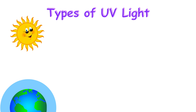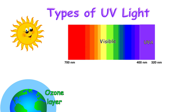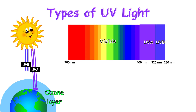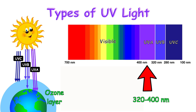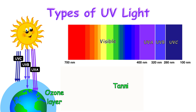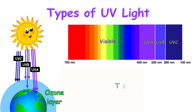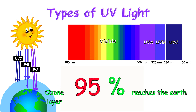UV light can be further divided into UVA, UVB, and UVC. UVA has the longest wavelength, between 320 and 400 nanometers. UVA can cause immediate tanning and skin aging, which includes wrinkles. It is not readily absorbed by the ozone layer, and about 95% reaches the Earth.